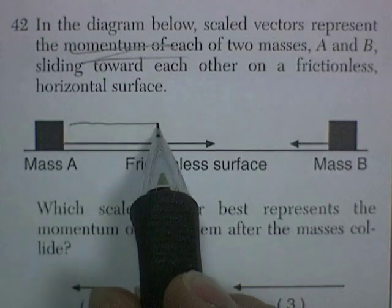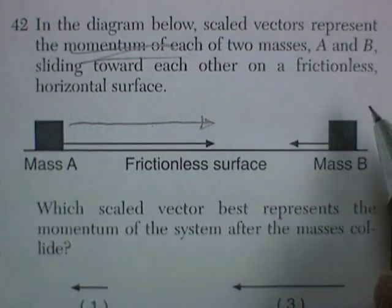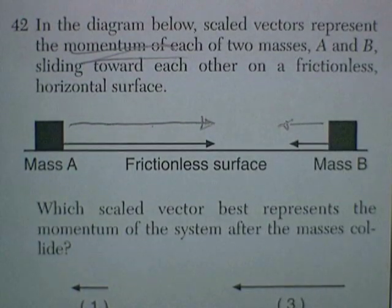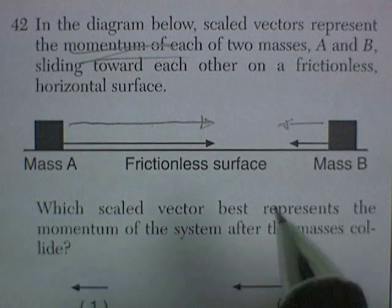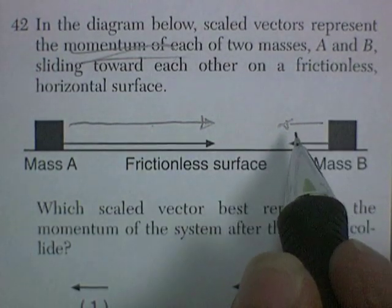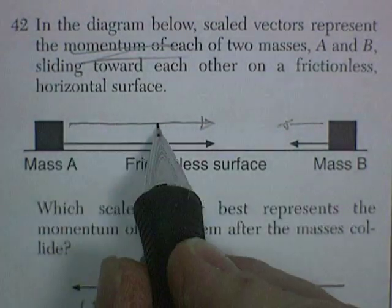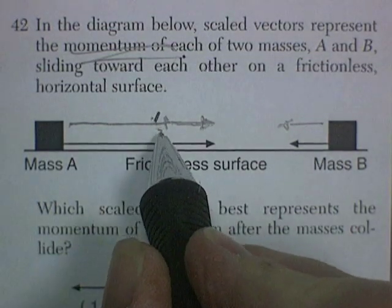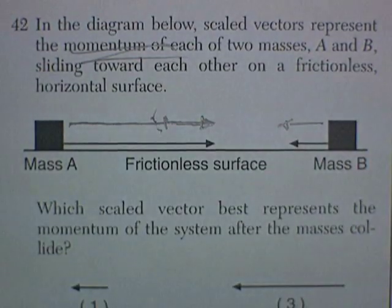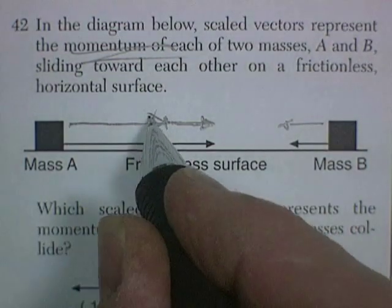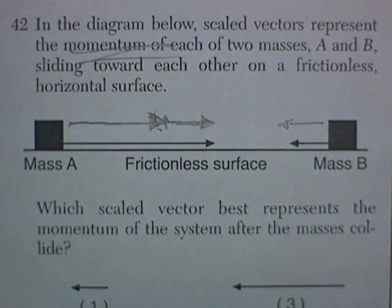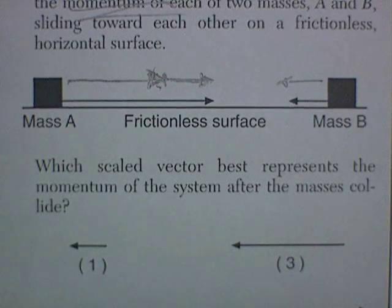We notice that mass A has a large vector, which means a large momentum, and poor mass B's got this little puny vector trying to fight it. Well, vectors are drawn to scale, and we can use geometry to find the resultant. So we would take A, subtract from it whatever B is, and the resultant would be A wins. Not as strong. B is going to slow it down, but A is going to win. So now we go read the question. Which scaled vector best represents the momentum of the system after the masses collide?